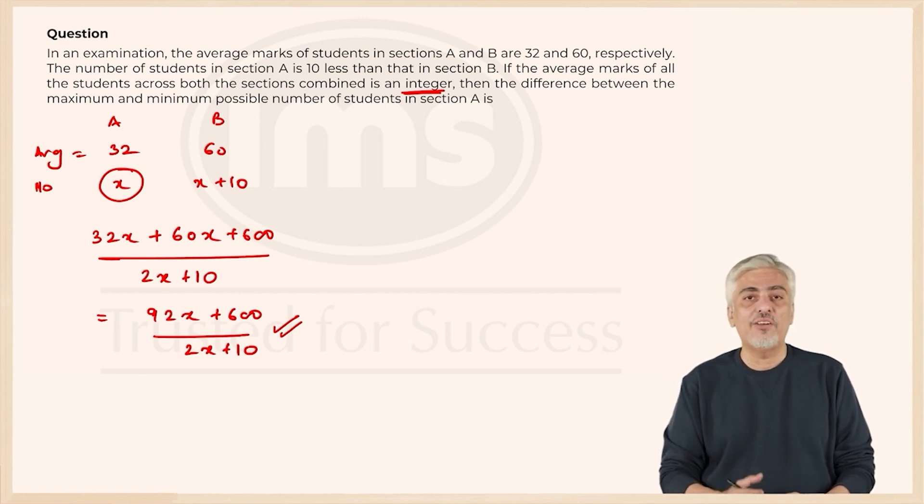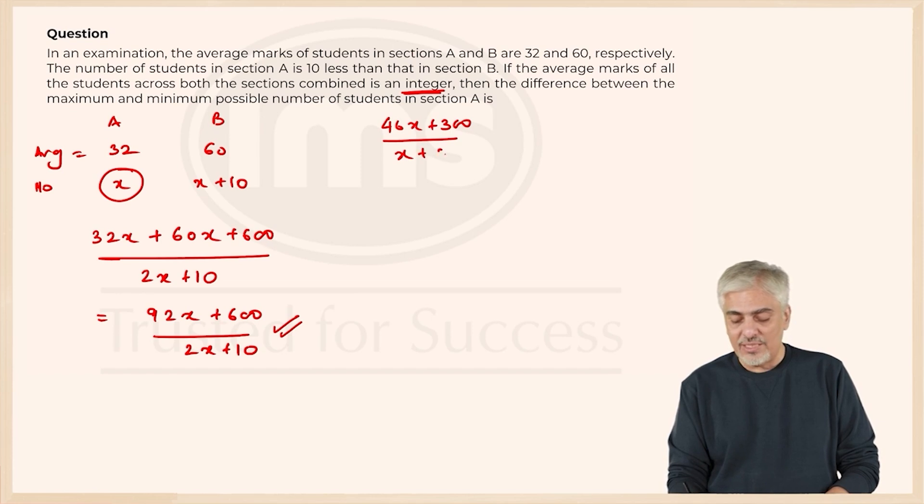So I kind of took it after I came out and when the response sheet was released. So 92x plus 600 upon 2x plus 10. I can first divide by 2. So I will get 46x plus 300 upon x plus 5.